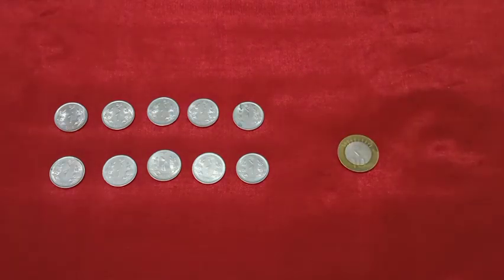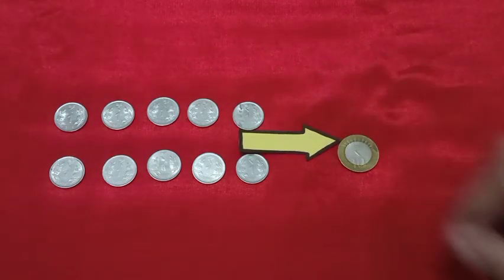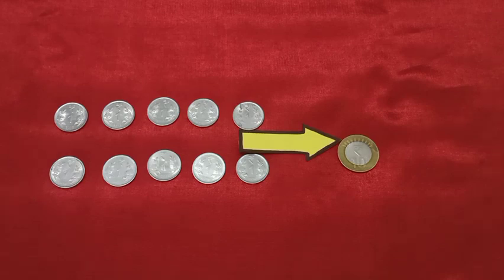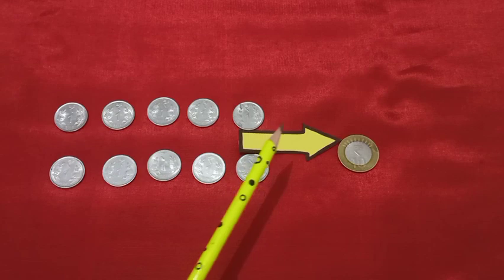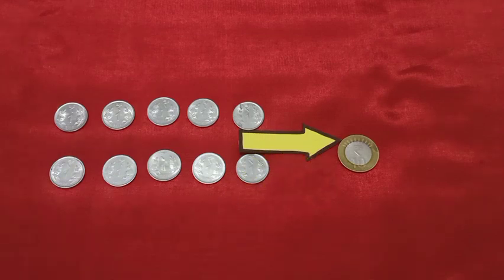So we can take a greater value coin instead of the small value coins. Here, 10 one-rupee coins are same as 1 ten-rupee coin.